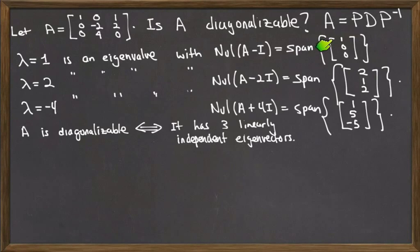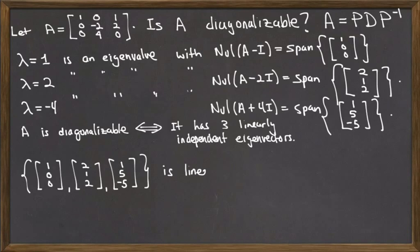Otherwise, they would be eigenvectors for the other eigenvalues, and it just can't happen that way. And so it must be that these 3 eigenvectors are linearly independent. Therefore, my matrix A will be diagonalizable. It's up to me now to tell you what P and D will be.